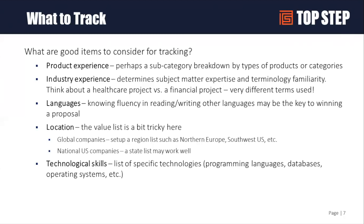What I find are good things to track are product and industry, because those tend to be driven by the needs of your organization. As you sign new deals and get new professional services engagements, you need to find people that know certain products and industries. For example, at Top Step, everyone has to know OpenAir, but some people know Dell Boomi as an integration tool, others are experts on Integration Manager, and yet others are experts on Celigo. Languages are also a good one, especially if you're a global company — you may need someone who can speak, write, and read in Japanese or Spanish.